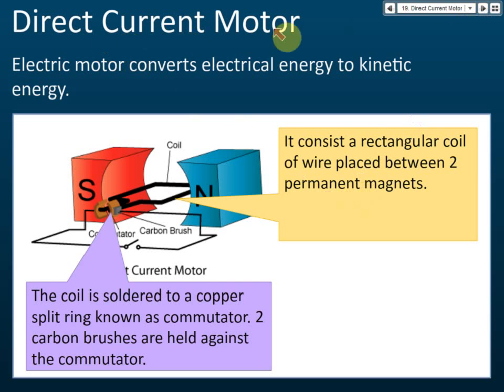Let's start with a direct current motor. An electric motor converts electrical energy to kinetic energy. We give electrical energy to the motor, and the motor changes this electrical energy to kinetic energy and makes the motor rotate.